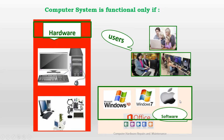A computer cannot operate without three things. Number one, the hardware. Number two, the software. And number three, the user. The hardware is the tangible or physical part of the computer. The software consists of the programs that are inside the computer, while the user is the person who operates the computer.